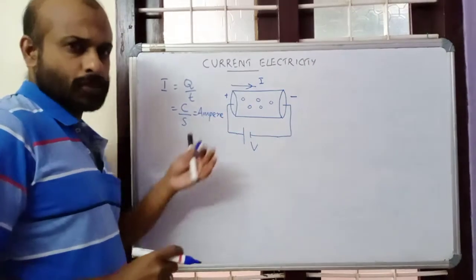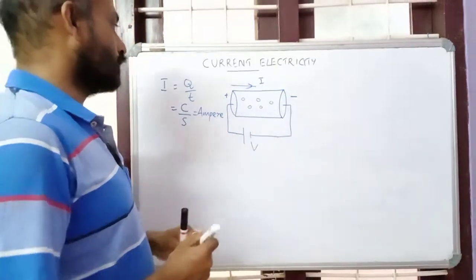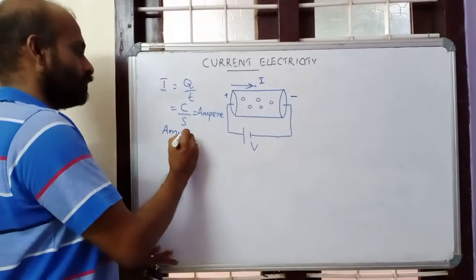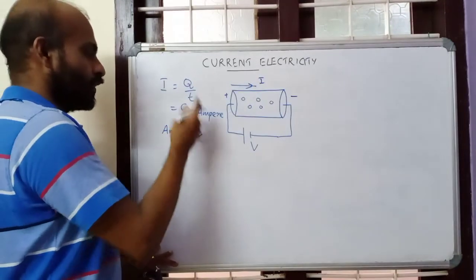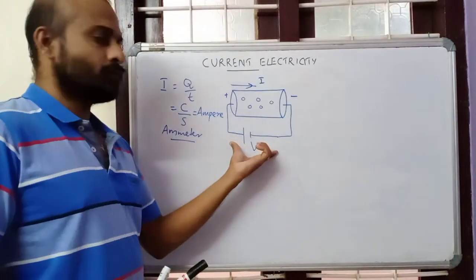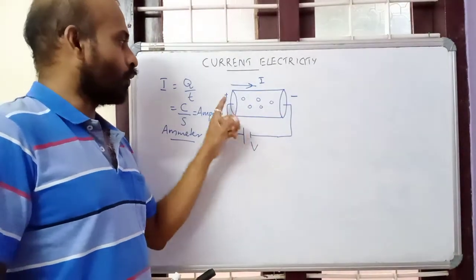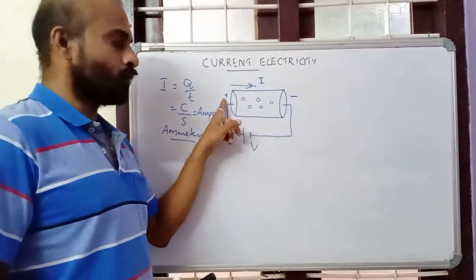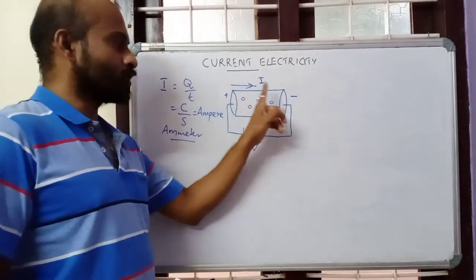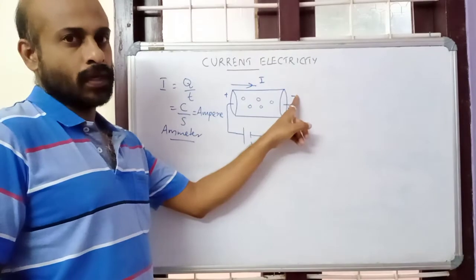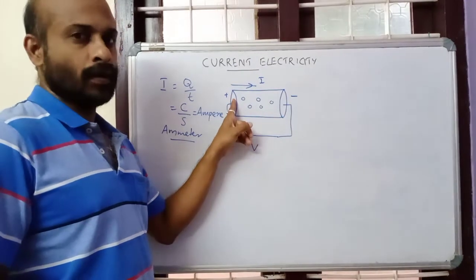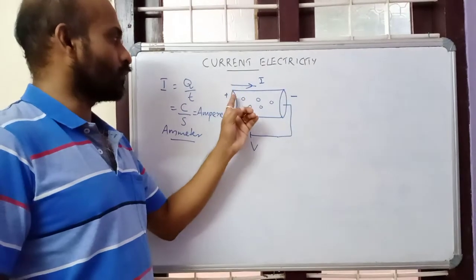Ampere is the SI unit of current. To measure current, the device we use is known as an ammeter. When we apply a potential difference, one end is at high potential and the other is at low potential; current will start to flow from high potential to low potential. Actually electrons flow from negative terminal to positive terminal, but conventionally current direction is from positive to negative.